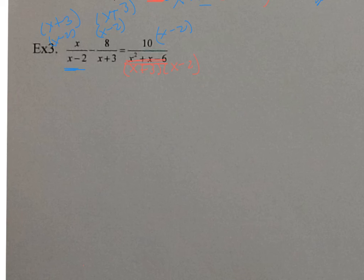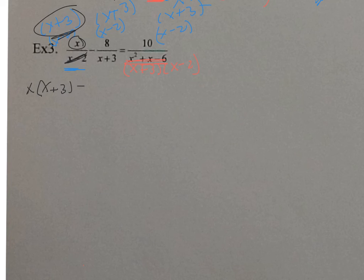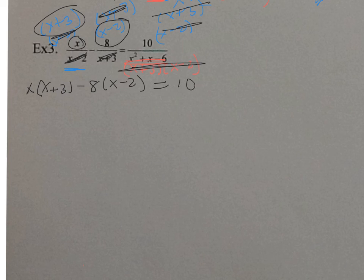So everyone gets x plus 3. Now let's reduce. x plus 2 and x plus 2 reduce - wait, x minus 2 and x minus 2 reduce - so I'm left with x times x plus 3. Then x plus 3 reduces with x plus 3, so I'm left with 8 times x minus 2. And this whole thing reduces with that whole thing, so I'm left with equals 10. Now we're going to distribute. x times x is x squared, x times 3 is 3x, negative 8 times x is negative 8x, and negative 8 times negative 2 is positive 16, equals 10.